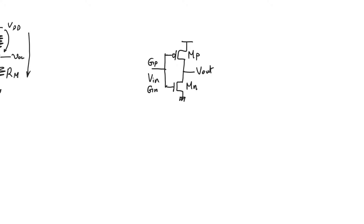The transistors also share the output node. The output node is the drain for both the PMOS and the NMOS. Recall that for the PMOS the drain is the lower potential, and for the NMOS the drain is the higher potential. The source of the PMOS is connected to VDD, and the source of the NMOS is connected to ground.